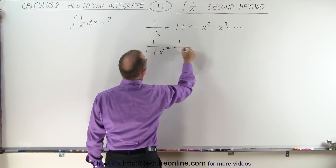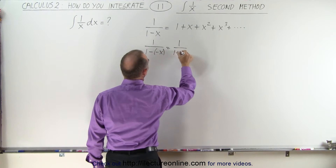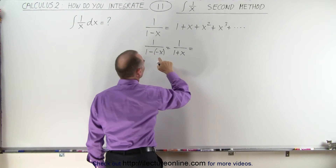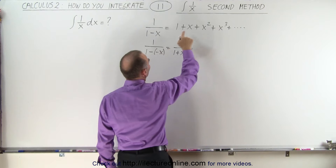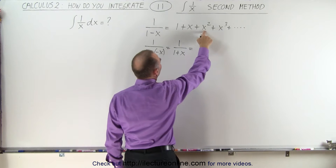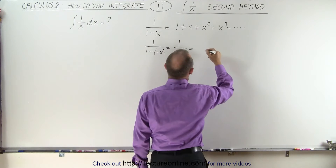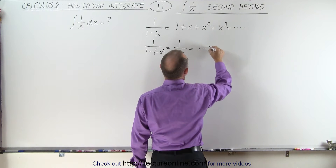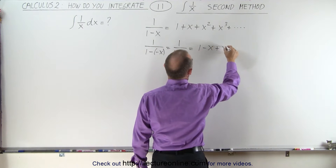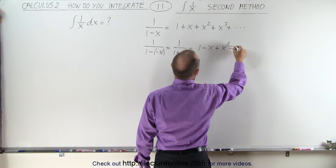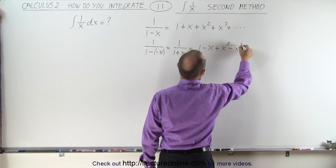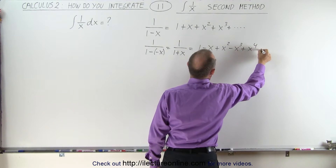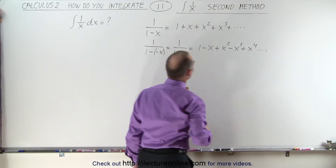Now we're going to write that 1 over 1 minus (minus x), which is equal to 1 over 1 plus x. All we have to do is replace every x by a minus x, so this becomes 1 minus x plus x squared minus x cubed plus x to the fourth, and so forth.